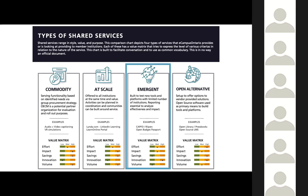One of the ways we're doing this is through the provision of shared services, in which we aim to leverage the strengths of the system through purposeful collaboration. We are currently providing four types of shared services: commodity, scale, emergent, and open alternative services. The educational technology sandbox falls under the emergent pillar because it's in the sandbox that a limited number of member institutions test new tools and platforms — basically like a pilot project.